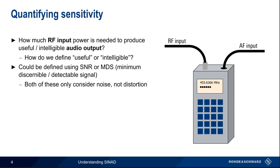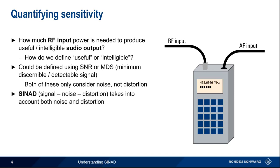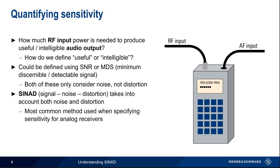Therefore, the most common quantity used in receiver sensitivity testing is something called SYNAD, which stands for signal, noise, and distortion. As the name implies, SYNAD does take into account both noise and distortion. Although SNR and MDS are sometimes specified when making sensitivity measurements, SYNAD is, by far, the most common method used when specifying the sensitivity of analog receivers, in particular, FM receivers.